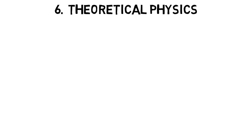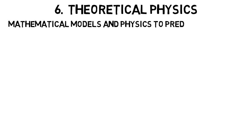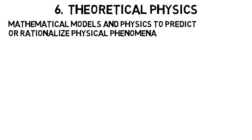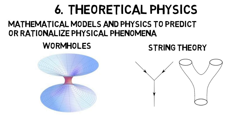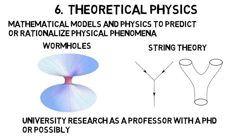Theoretical physics uses very advanced mathematical models and physics to then predict or rationalize physical phenomena. This would be like wormholes that are basically like a shortcut tunnel through the universe that could exist somewhere in space, or a string theory that predicts very small or quantum strings make up the universe, or what happened before the big bang. Most likely to get a job in theoretical physics would involve university research as a professor with a PhD, or possibly, but unlikely, a funded national lab.